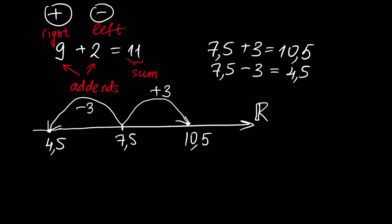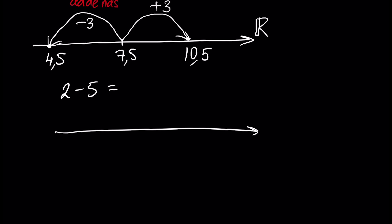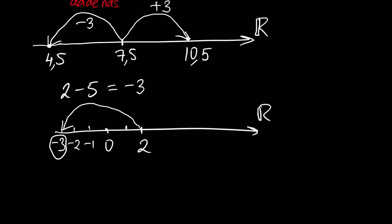Next example: assume we have 2 minus 5. If we start at 2 on the real line, and here we have 0, then minus 5 means moving to the left side by the amount of 5. And the result will be minus 3. So this is an obvious operation, and as we said, the result is also a real number.